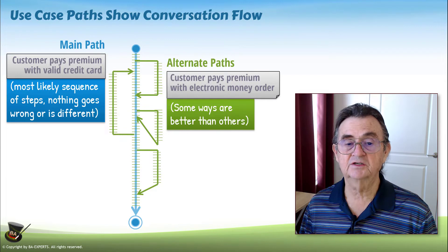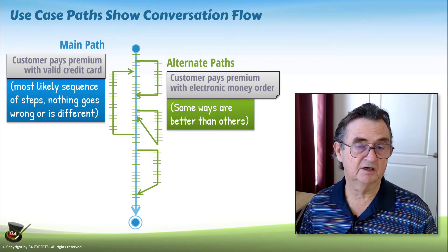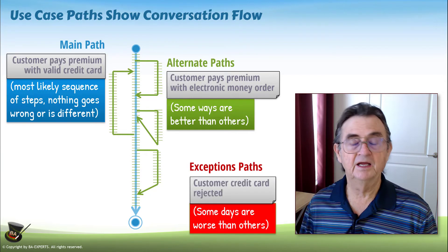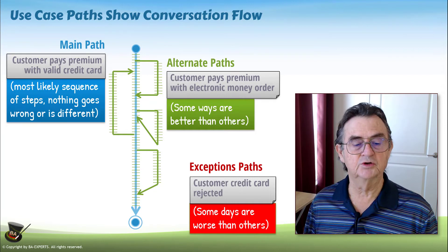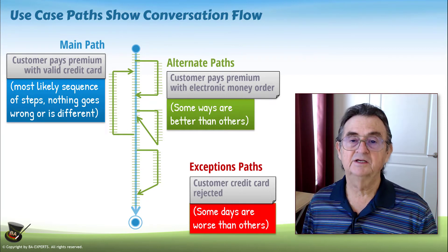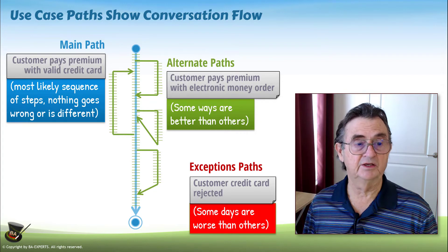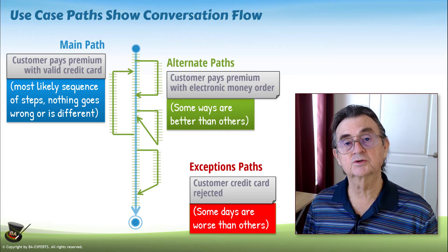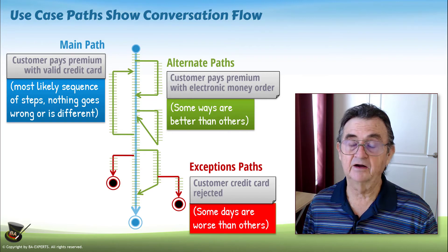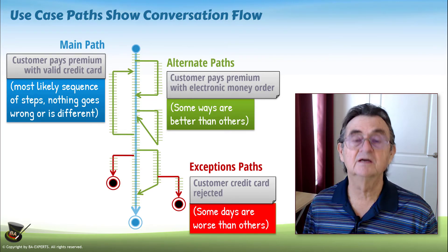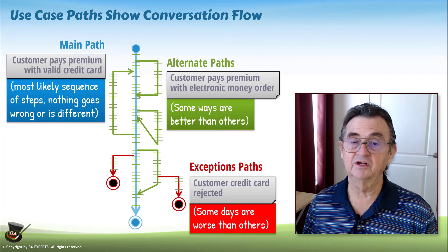In the use case philosophy there's another type of flow called an exception path. Exception paths are paths that do not end up satisfying the ultimate goal. Basically, if I'm dealing with a use case flow for a bot, this is where I would have things like branching off to talk to a human — getting out of the bot because we cannot reach the ultimate goal of the bot the way the bot is designed.